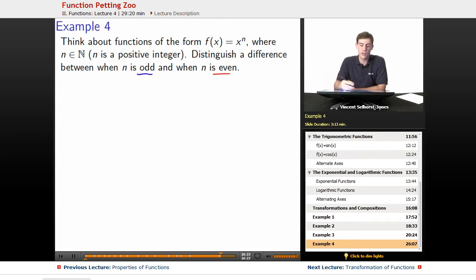So let's look at some examples for when n is odd. So n is odd would be like x, or maybe x cubed, or x to the fifth. So x, we know what x looks like. It's just like that.